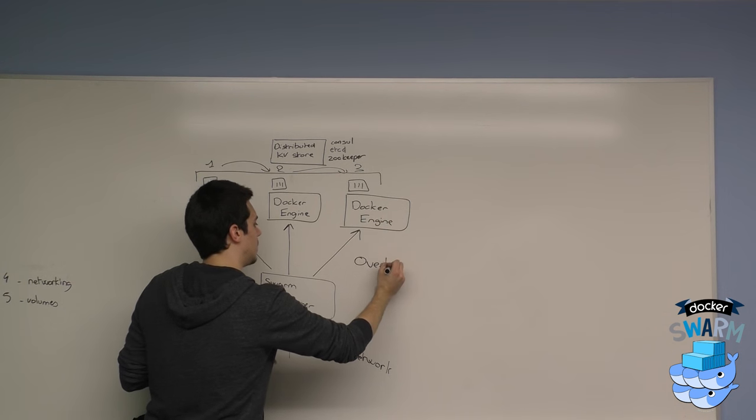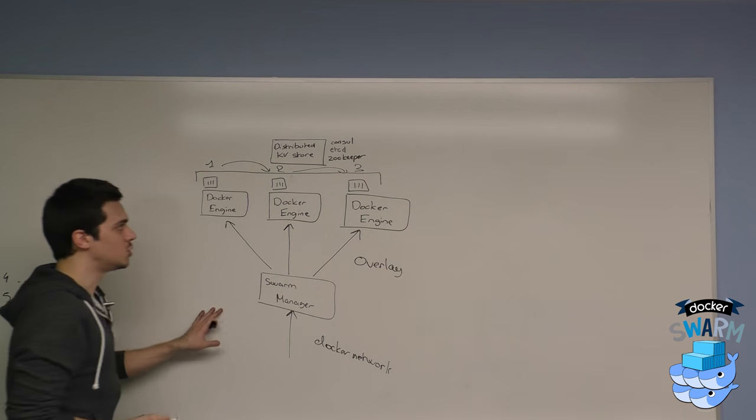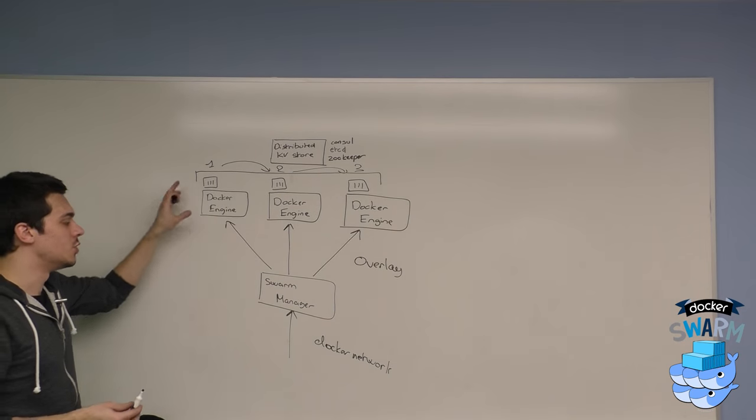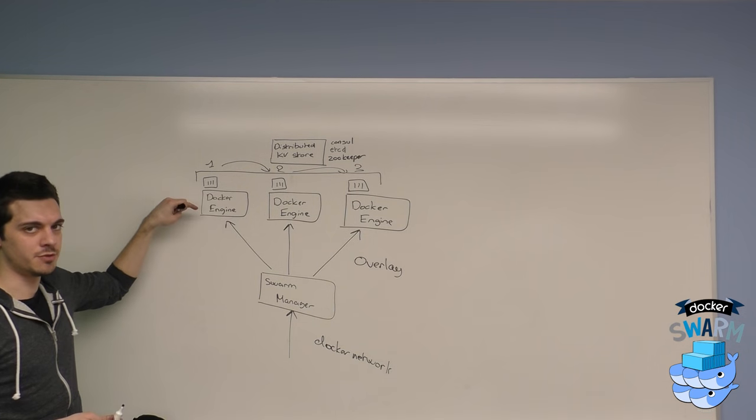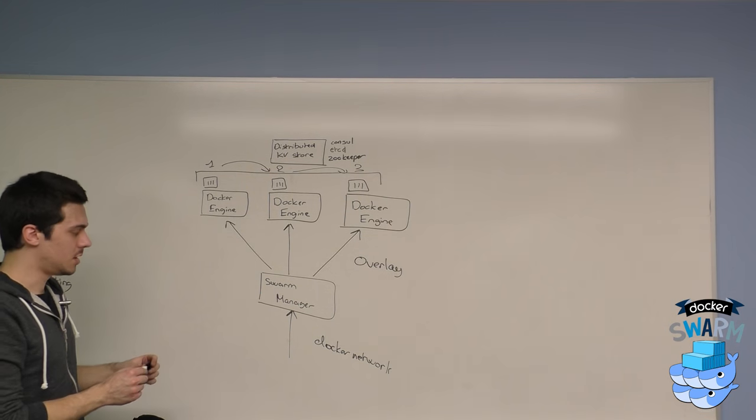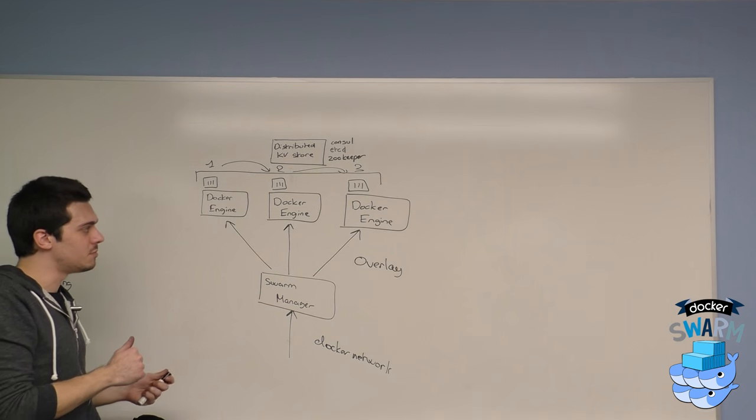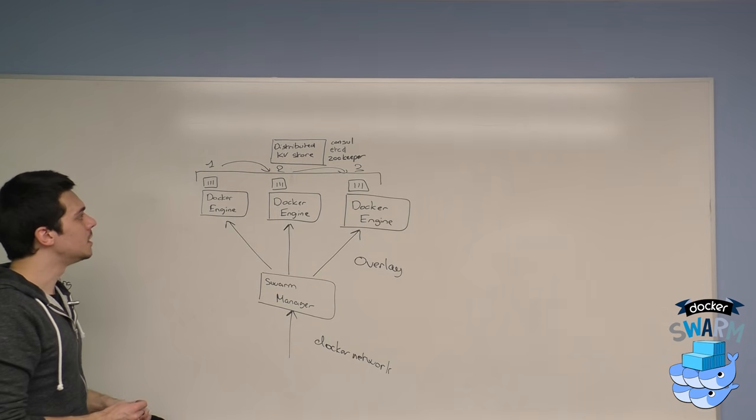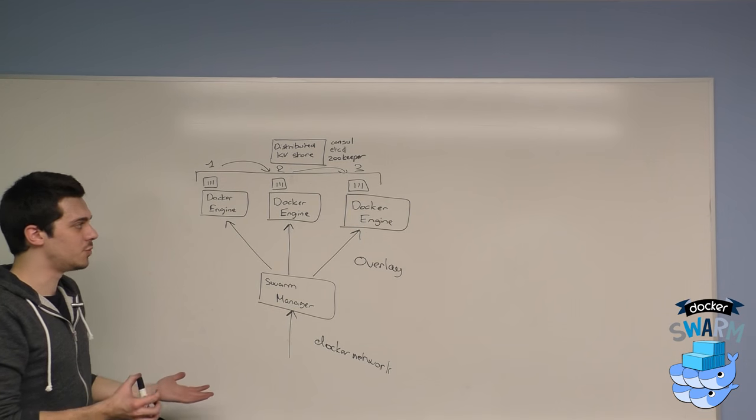This will basically create an overlay network based on the VXLAN driver of your machine, whatever it is, if it's an Ubuntu machine, etc. You need to use a minimum kernel version, but if you have the right setup.